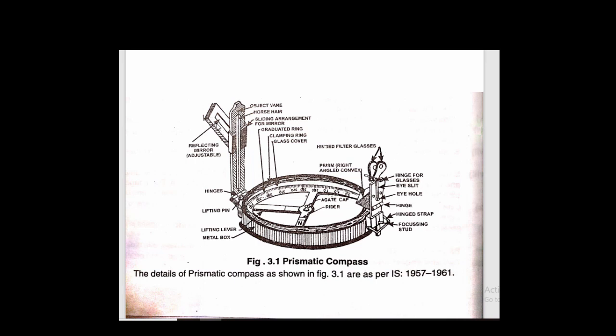After that, we look at the object here. Our eye hole comes for focusing. If we don't focus, then we look at the glasses. For the sun shade, we use these glasses. Here we look at the eye hole. Here we look at the object in this line, which we match with the chaining rod or any point. We note the reading here.